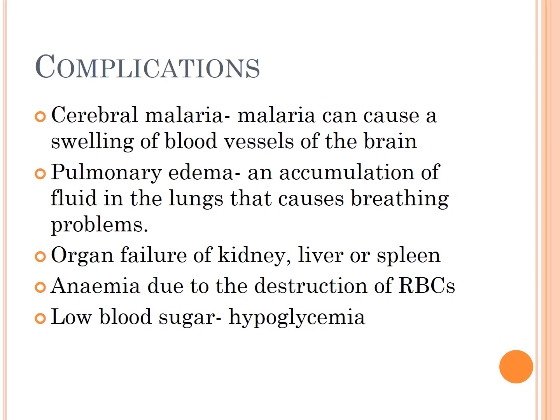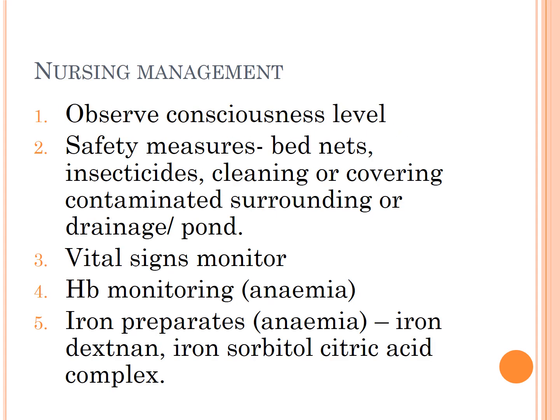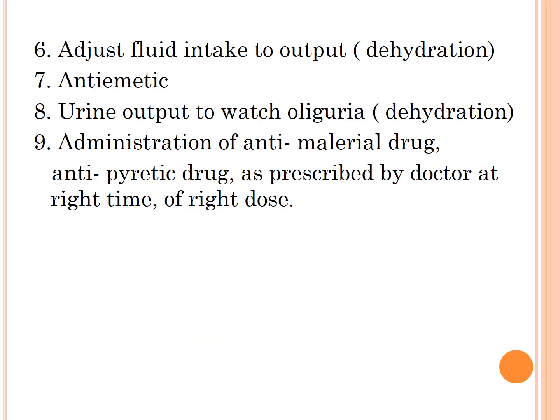Anemia results from the destruction of red blood cells. Low blood sugar, or hypoglycemia, requires monitoring of consciousness levels. Nursing care includes use of bed nets, cleaning or covering contaminated surroundings, drainage of ponds, monitoring vital signs and blood pressure, administering iron preparations to rule out anemia, adjusting fluid intake and output to prevent dehydration, administering antiemetics, watching for oliguria, and administering anti-malarial and antiparasitic drugs as prescribed by the doctor.